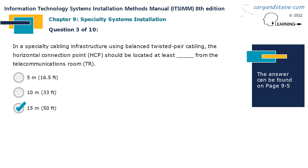In a specialty cabling infrastructure using balanced twisted pair cabling, the horizontal connection point, or HCP, should be located at least 15 meters (50 feet) from the telecommunications room, or TR.